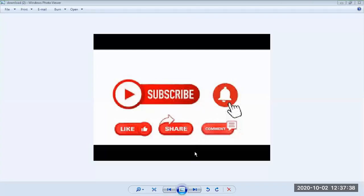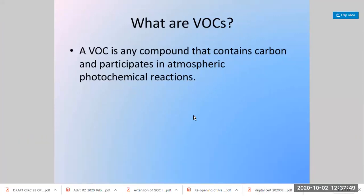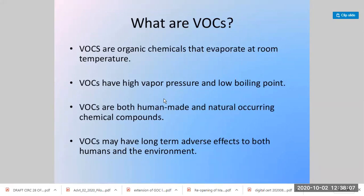Welcome back. Today we are going to look at volatile organic compounds. A volatile organic compound is a compound that contains carbon and participates in atmospheric photochemical reactions. These are generally volatile, meaning they form vapor very easily at room temperature. They have high vapor pressure and low boiling point. You can have man-made volatile organic compounds and also naturally occurring ones, which can have very long-term health effects on both humans and the environment.